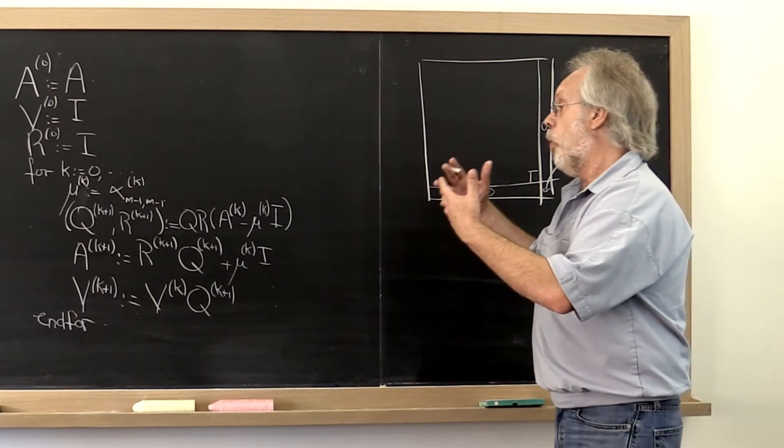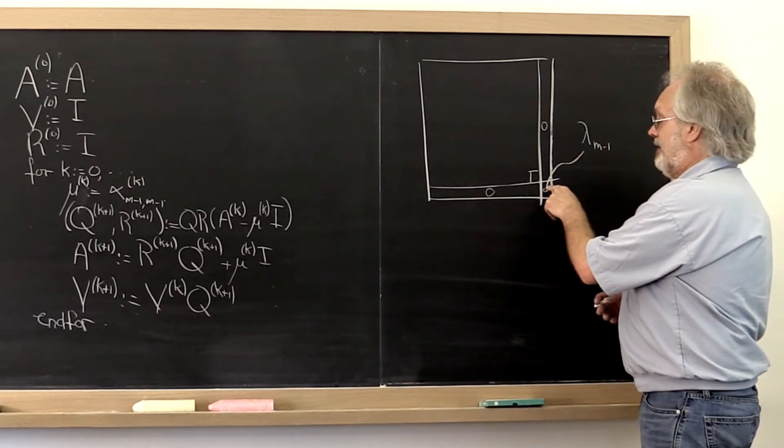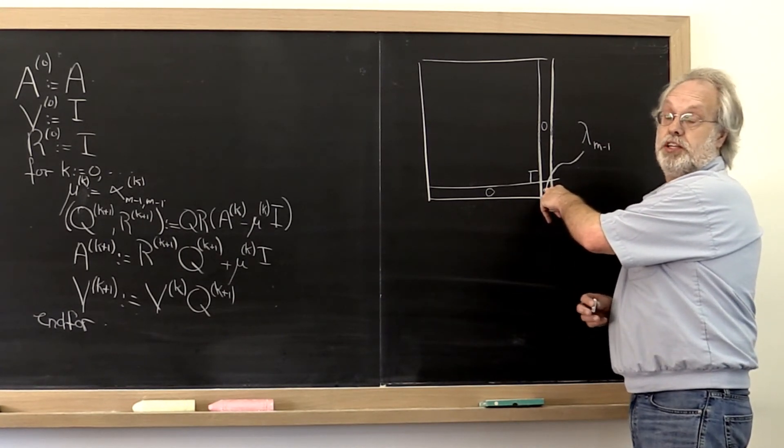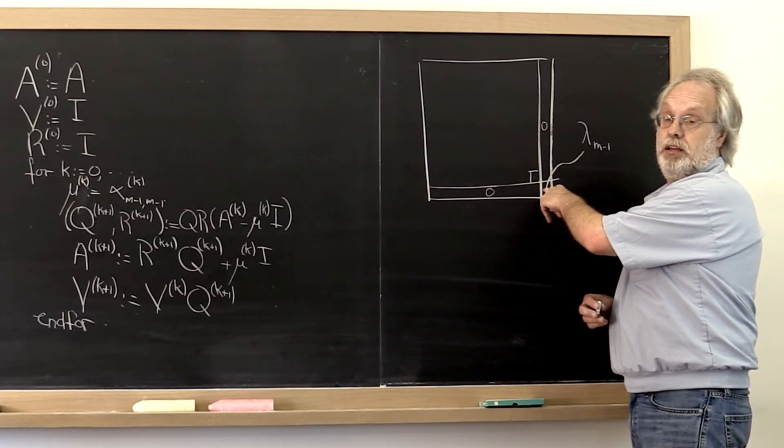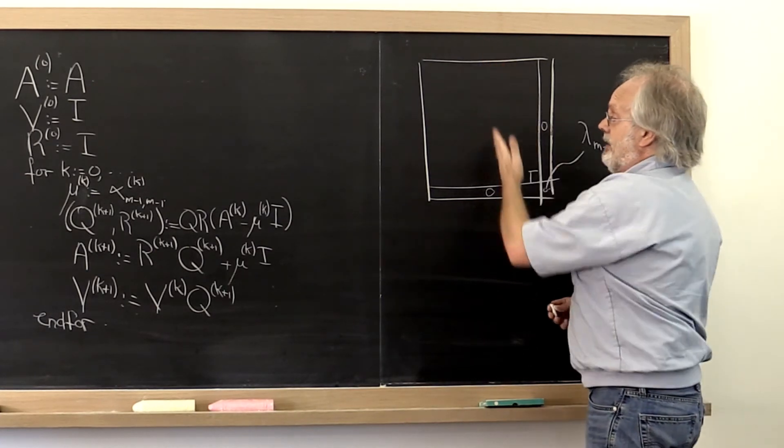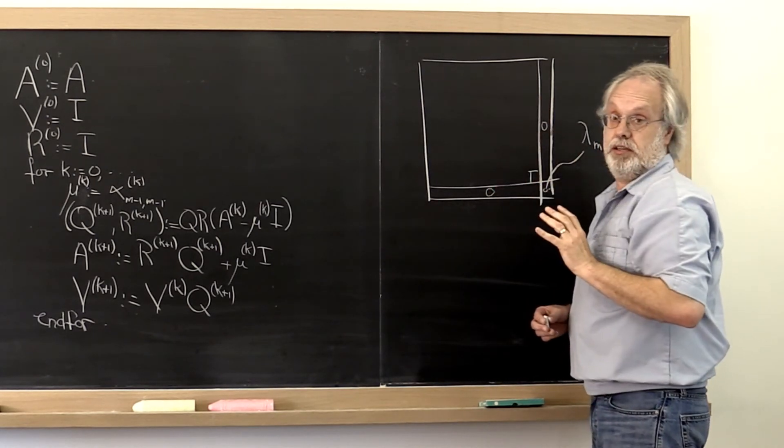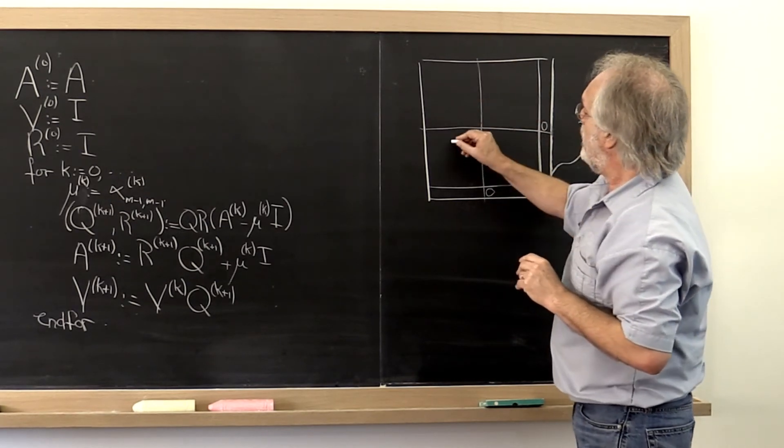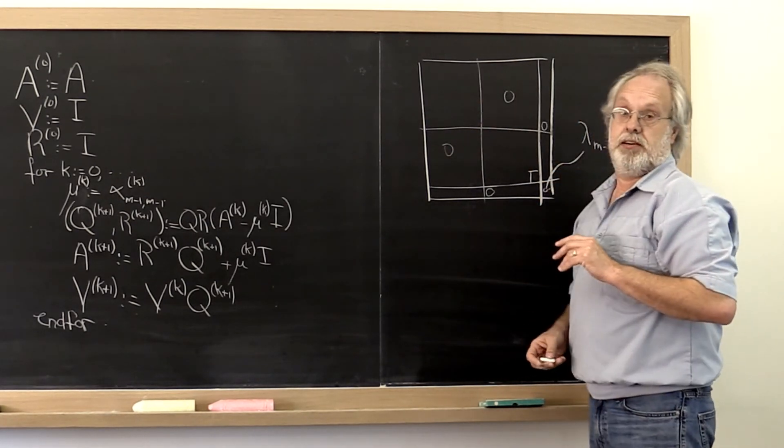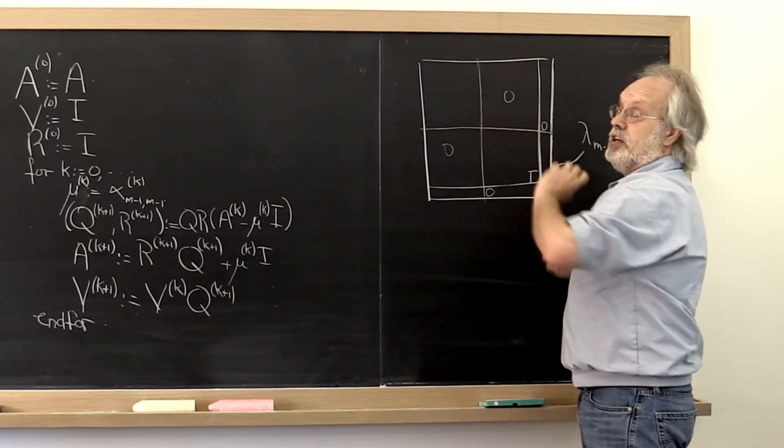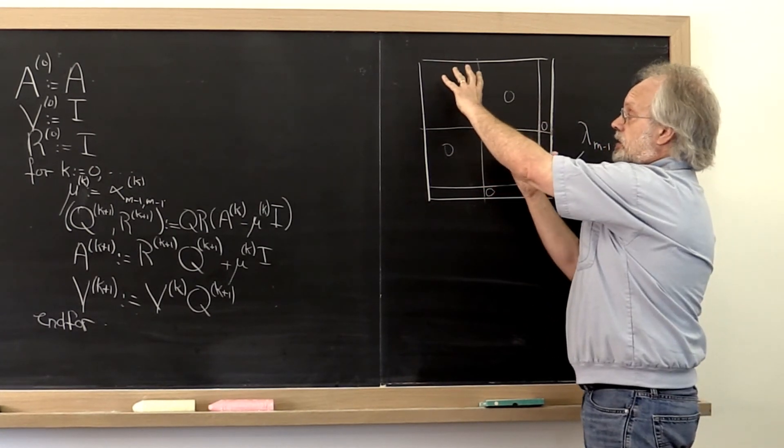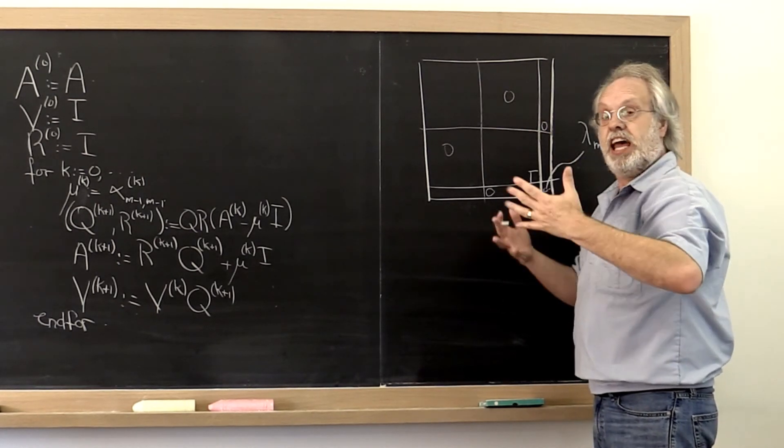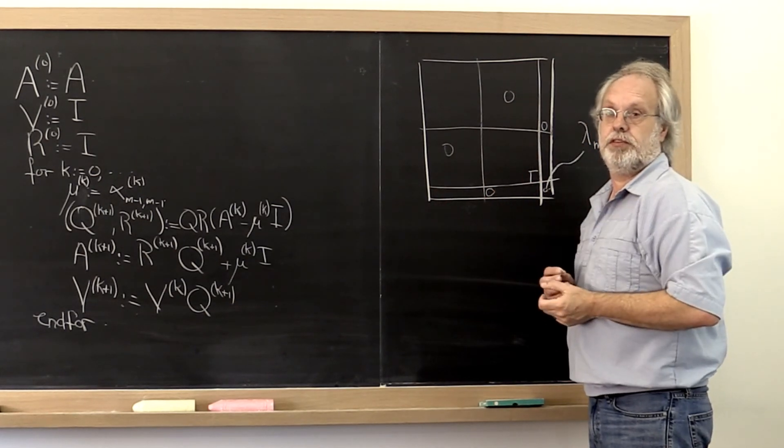Now because while we are actually converging to this eigenvalue at a rate that is similar to the rate of power iteration, which is very quick indeed, we are also applying the power method to the rest of the matrix, it is entirely possible that we are fortunate that along the way somewhere zeros appear in such a way that we can actually deflate into smaller subproblems that are still a little bit more substantial. And if that happens, that's just a happy additional benefit of the algorithm.